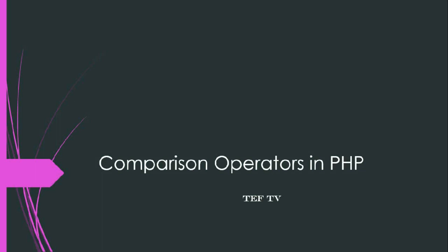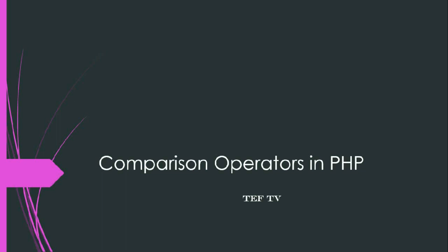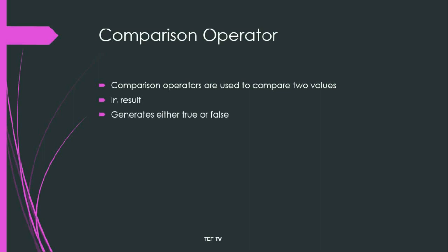So let's see what are comparison operators. Comparison operators are used to compare two values. When we compare two values, we will get the result as either true or false. But in PHP, when we get the result as true, it will print value one, and when we get result as false, it will generate null string or null.